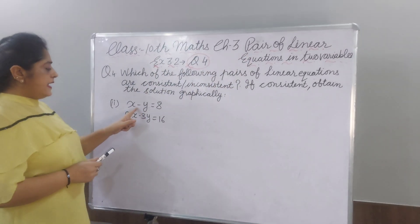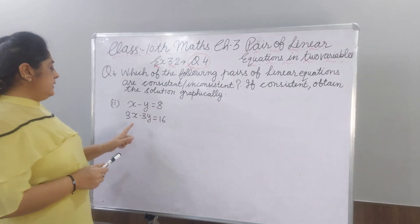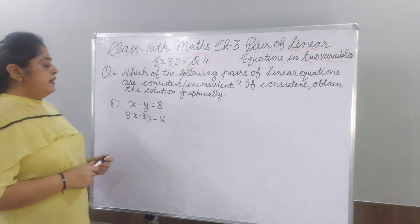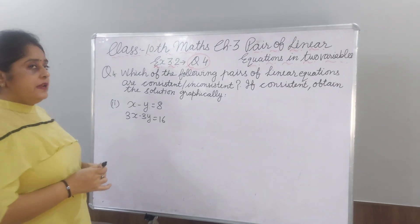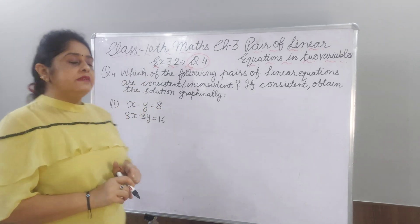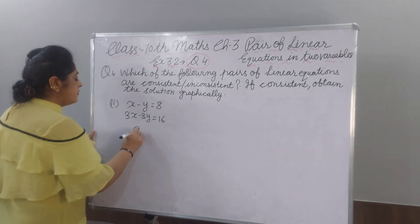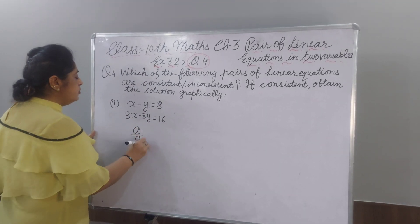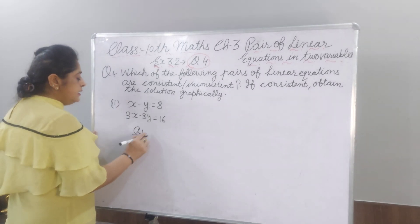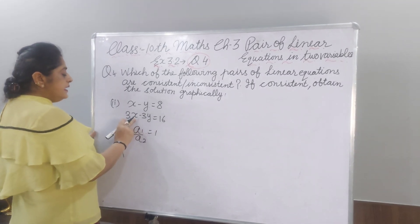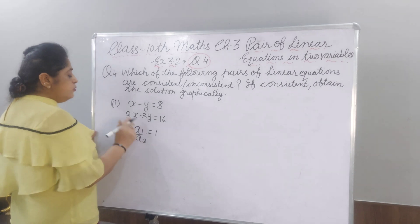Second part statement is X minus Y equal to 8, 3X minus 3Y equal to 16. First, we will compare A1, A2, B1, B2 and C1, C2. A1 by A2, coefficient of X is 1. And here second equation means A2, it is 3.